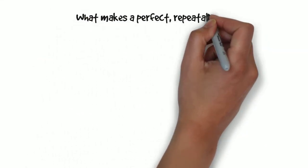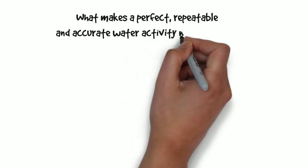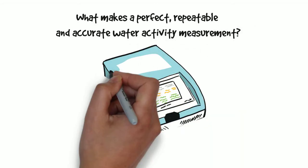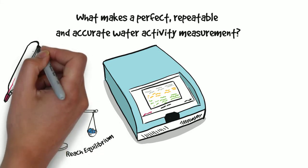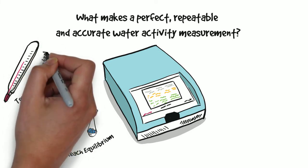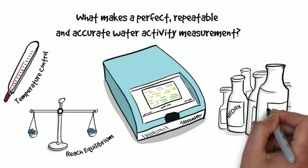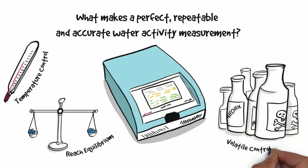What makes a repeatable and accurate water activity measurement? In measuring water activity, wait until the sample has reached stability. Measure at a consistent temperature so that you can compare values. Neutralize the influence of volatiles which can skew your results.